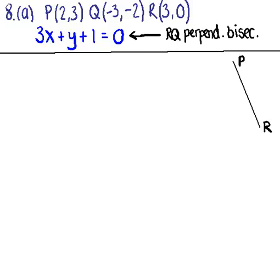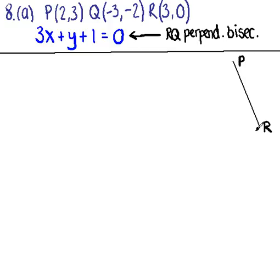This is question 8a part 2. We have the three vertices again of the triangle P, Q, and R, and we have the important information from the first part of the question, which is the equation of the perpendicular bisector to side RQ. The question asks us to find two perpendicular bisectors — the first one we did in part one, and in the second part of question 8a we want to find the perpendicular bisector to side PR.